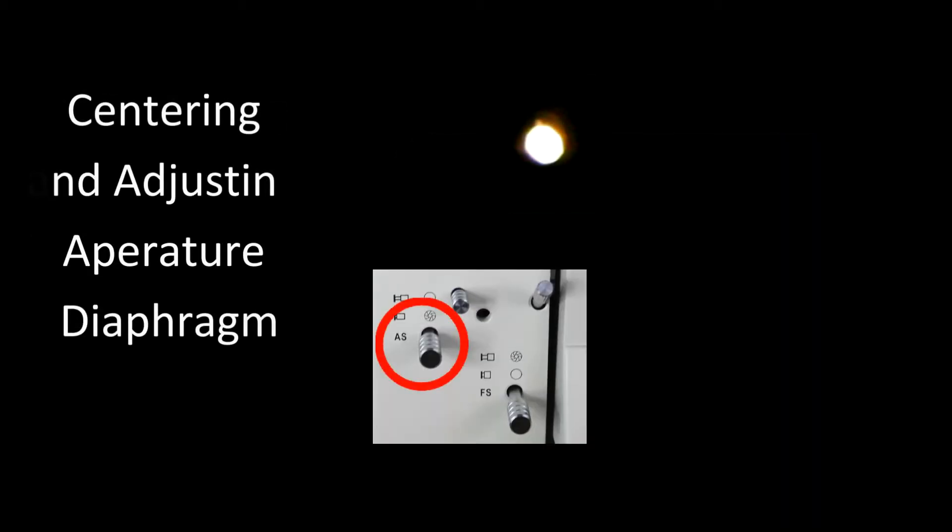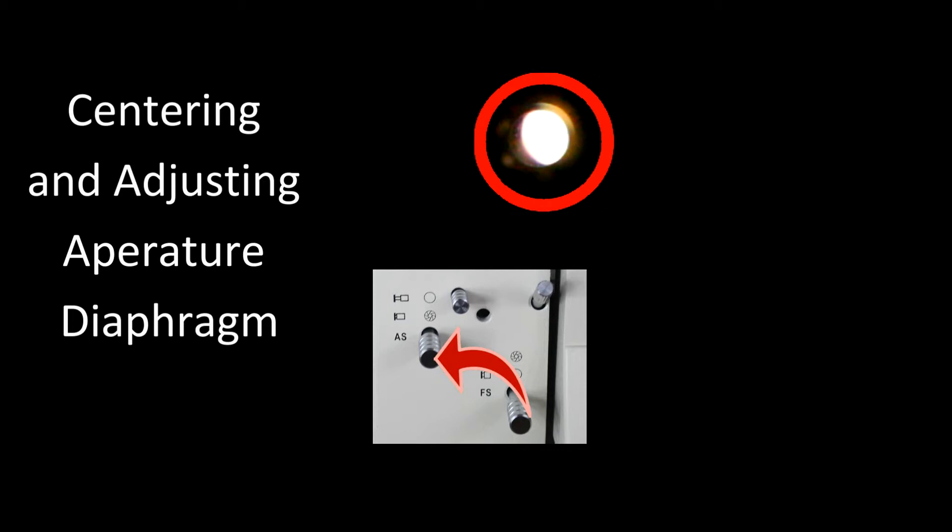To align the aperture diaphragm, what we want to do is we want to use the 50x objective and remove one of the eyepieces. So looking down the eyepiece, and using a low light intensity, what we want to do is we want to adjust the field aperture so that as we move the iris in and out, it moves equally. What I find is the best way to do this is to actually focus onto the diaphragm so that you can see the edges of the diaphragm. And then when you move it in and out, you can see the edges moving.